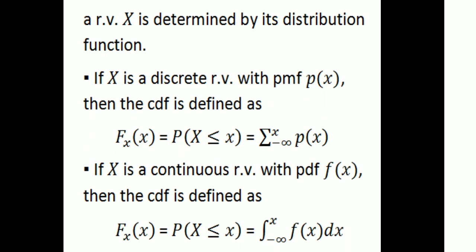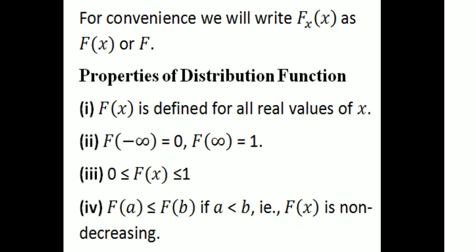Suppose x is a continuous random variable. If x is a continuous random variable with probability density function f(x), then the CDF is F(x) = integral from minus infinity to x of f(x) dx. For convenience, we will write F_x(x) as f(x) or capital F.